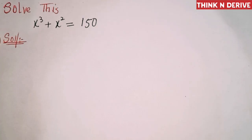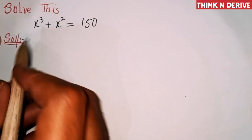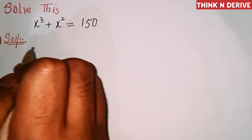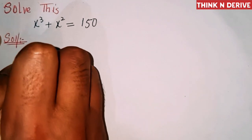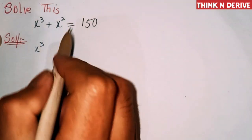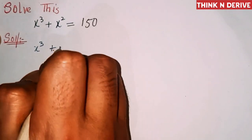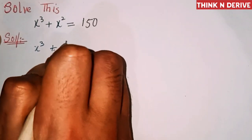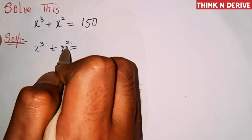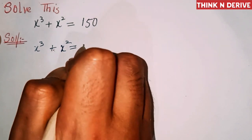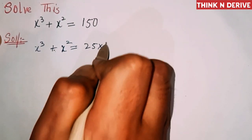Hello everyone. In this video we will discuss a nice polynomial problem: x³ + x² = 150. So let's start the question. In the first step we will write x³ + x² = 150, which can be written as 25 × 6.